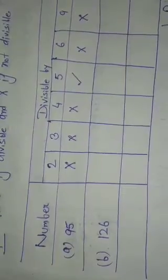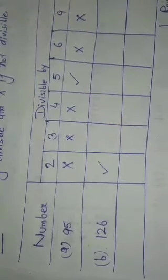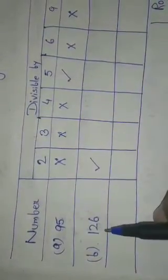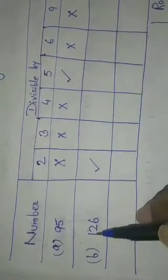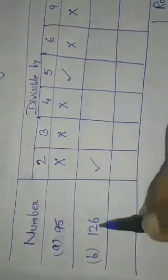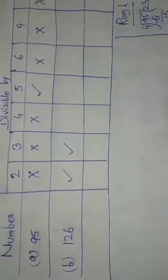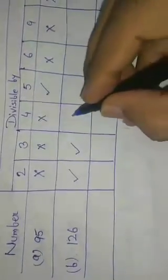In 126, the ones digit is 6. So that number is divisible by 2, because the rule for 2 is: if the ones digit is 0, 2, 4, 6, or 8, the number is divisible by 2. Now check divisibility by 3: the sum of the digits of 126 is 1 + 2 + 6 = 9. Since 9 is divisible by 3, 126 is also divisible by 3. Then, divisibility by 4: the tens number is 26. Since 26 is not in the 4 times table, 126 is not divisible by 4 — put a cross. For divisibility by 5: the ones digit is 6, which is not 0 or 5, so 126 is not divisible by 5.